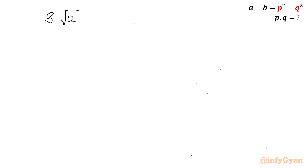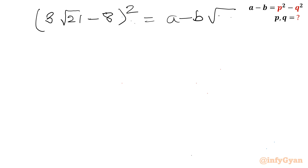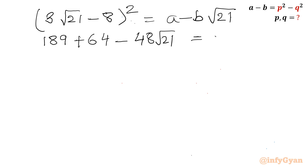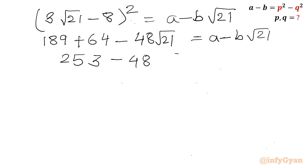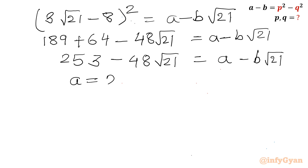So we have 3 square root 21 minus 8, whole squared, equal to A minus B times square root 21. Now squaring: 9 times 21 is 189, plus 64, minus 2 times 3 times 8 times root 21, which is 48 root 21. So 189 plus 64 is 253, minus 48 root 21, equals A minus B times root 21. Comparing both sides: A equals 253 and B equals 48.